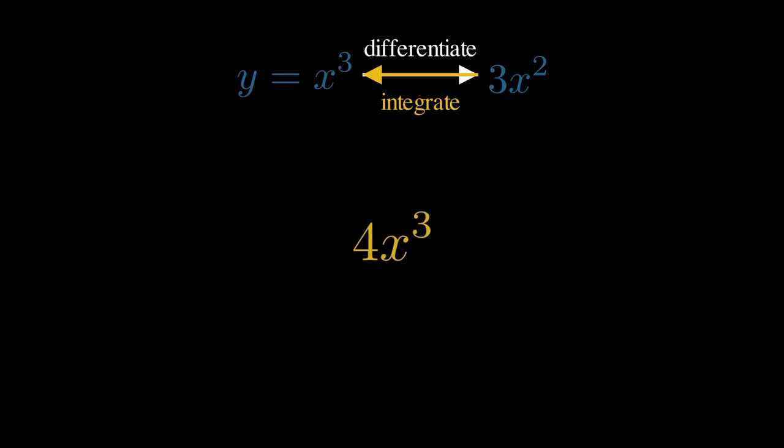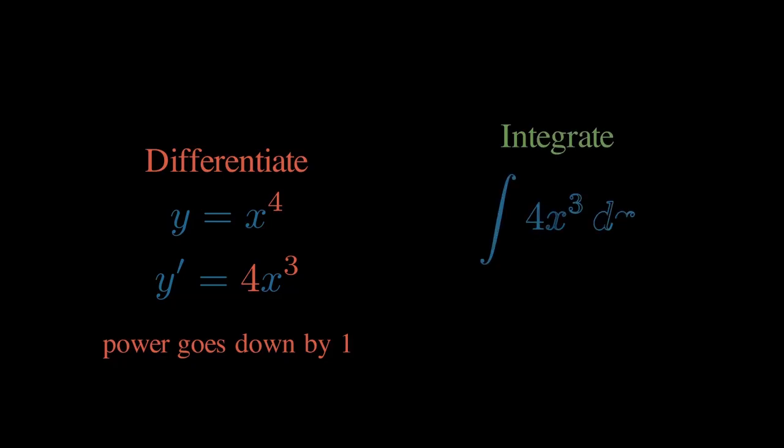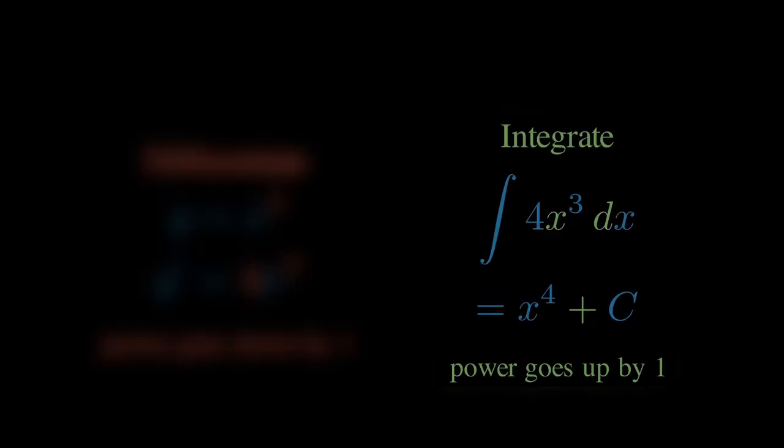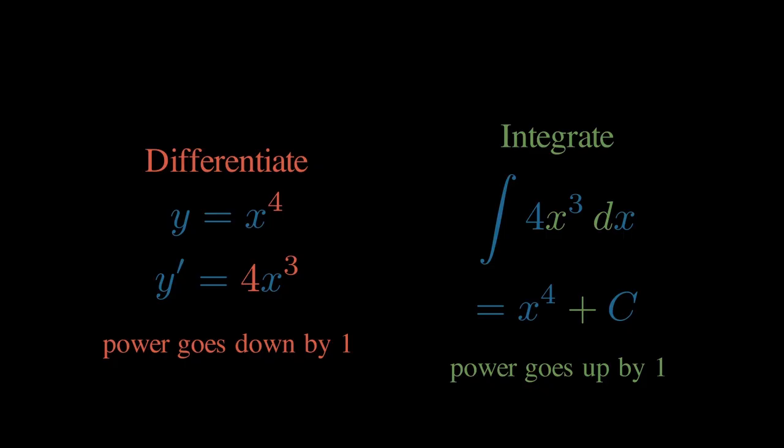So the question becomes, what if we had something like 4x cubed? What do you think the reverse would be? Well, when we differentiate x to the power 4, we get 4x cubed. Which means if we integrate 4x cubed, we must, by extension, get x to the power 4. As you can see, that's our first pattern here. Notice what happened. When differentiating, the power went down by 1. When integrating, the power goes up by 1. It's the perfect mirror image.